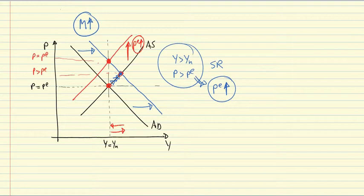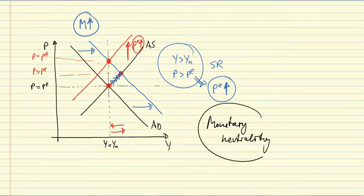Now this result is quite important and is labeled as monetary neutrality. That means that in the medium run monetary expansions are neutral with respect to output. Monetary expansions do not have an effect on the unemployment rate or output in the medium run but they do have an effect in the short run.